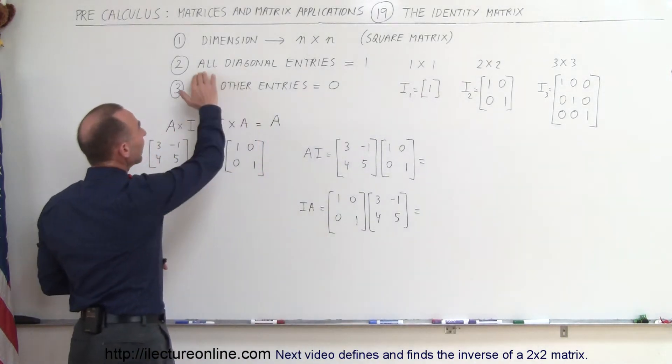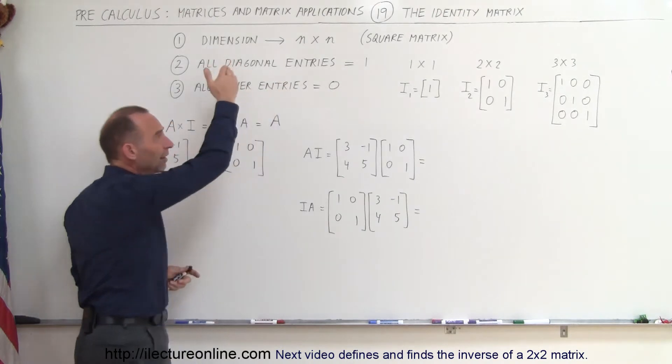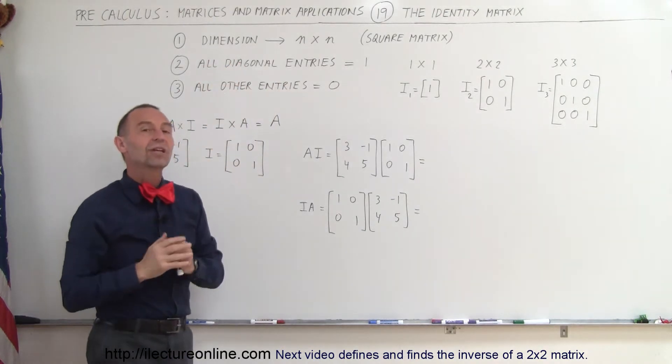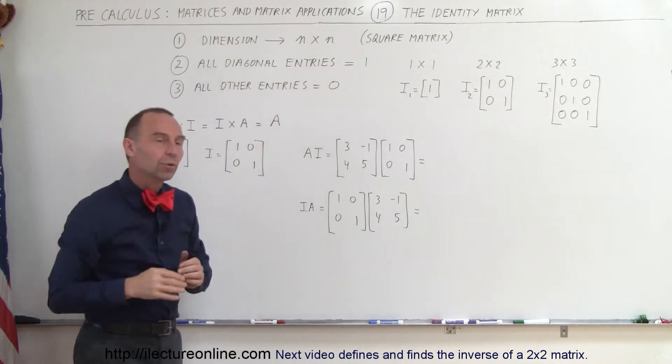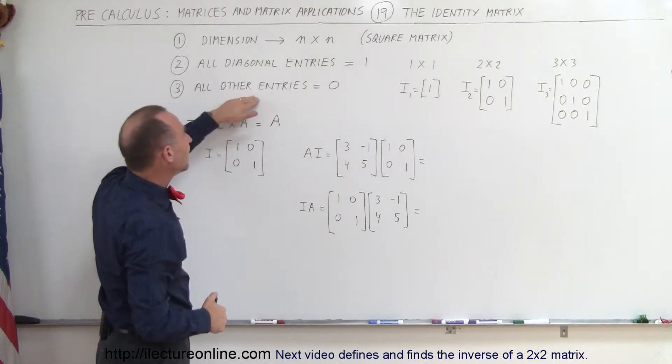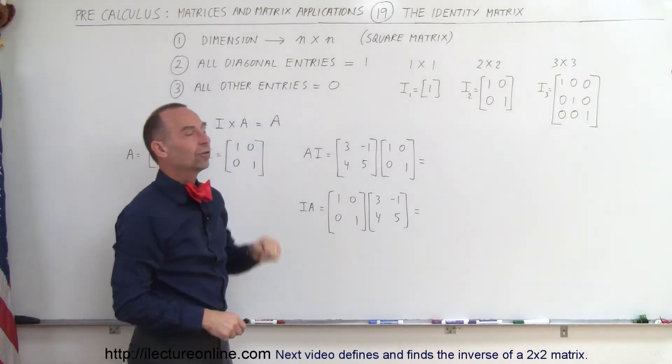Secondly, all the diagonal n entries from upper left to lower right must equal 1. So, across the diagonal, they all must be 1s. And all the other entries in the matrix must equal to a 0.